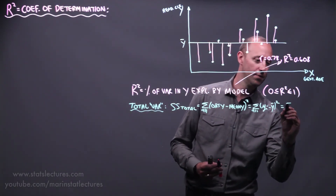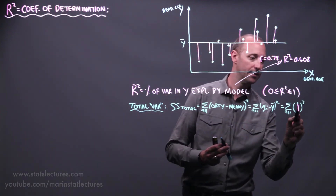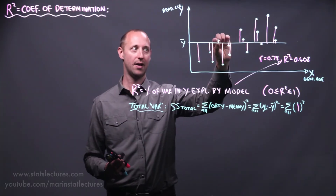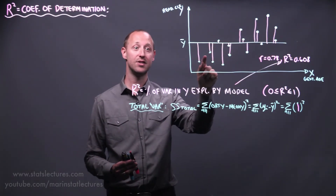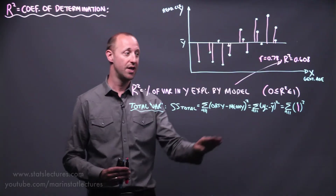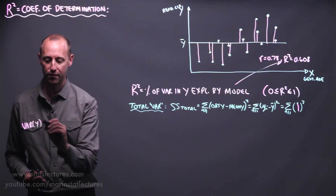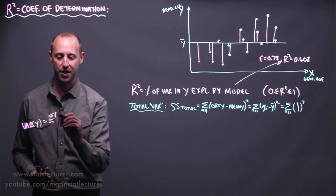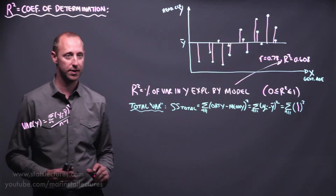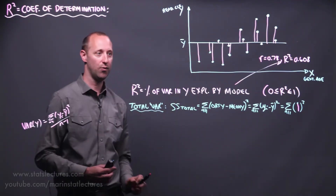In terms of the picture, we sum over all observations these distances squared — take this distance, square it, add it to this squared, this squared, and so on for all observations. You can also notice this is the numerator of the variance formula: the variance of y is the sum of (yi minus y-bar) squared over n minus 1. So the sum of squares total is essentially the numerator of the variance — the total variability in y-values.